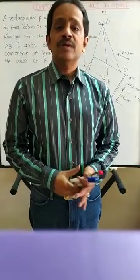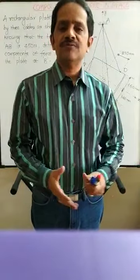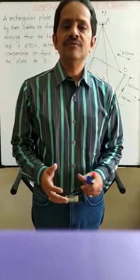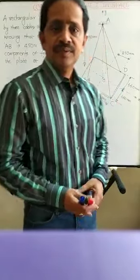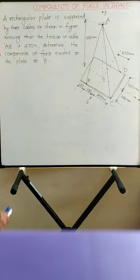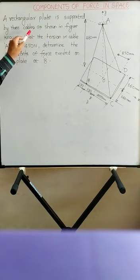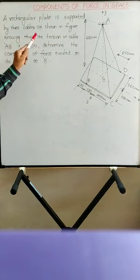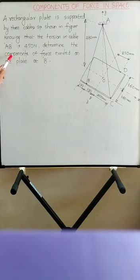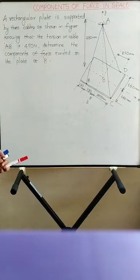In this video, we are going to see one more example of components of force in a three-dimensional force system. Let us read the statement of the problem. A rectangular plate is supported by three cables as shown in the figure. Knowing that the tension in cable AB is 450 N, determine the components of force exerted on the plate at B.